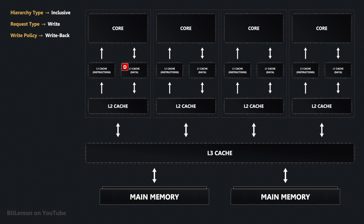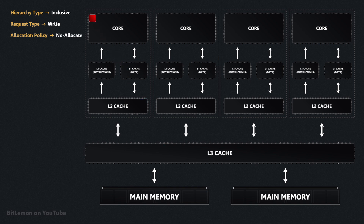For example, when a dirty block is evicted from L1, it is written to L2, where it will also be marked as dirty, waiting for eviction to the next level. Write misses are handled based on the cache's allocation policy. Write allocate ensures data blocks are brought into the cache hierarchy on a miss and updated there, while with no write allocate, the cache is bypassed and the data is written directly to the next level. If all cache levels are configured as no write allocate, data is written directly to main memory.